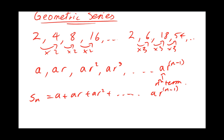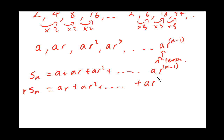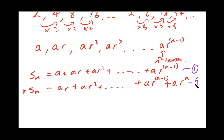Now what we're going to try and do is find a formula for this. To do that, I'm going to consider multiplying all these terms by R. So R times the whole sum gives us AR plus AR squared, and so on. The second to last term will be AR to the n minus 1, and imagining the term before that as AR to the n minus 2 times by R — adding the indices together — gives AR to the n minus 1.